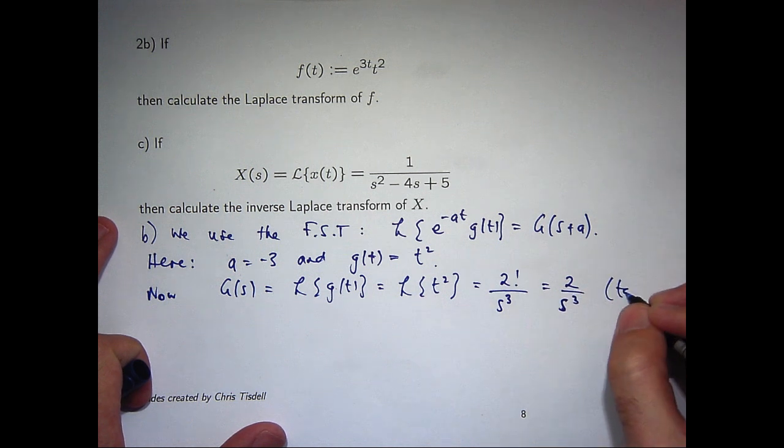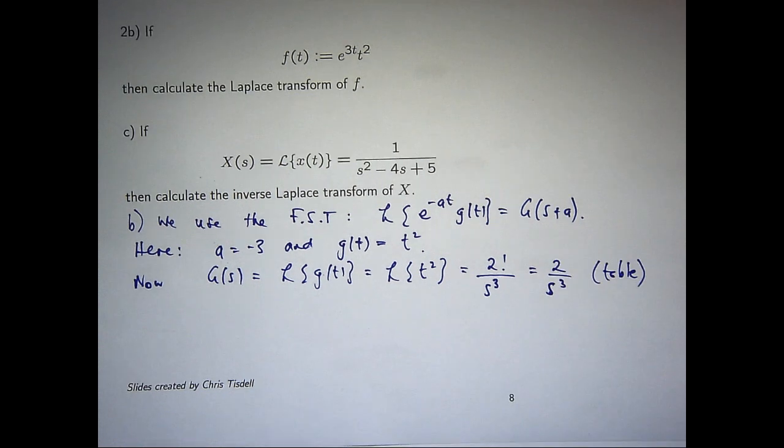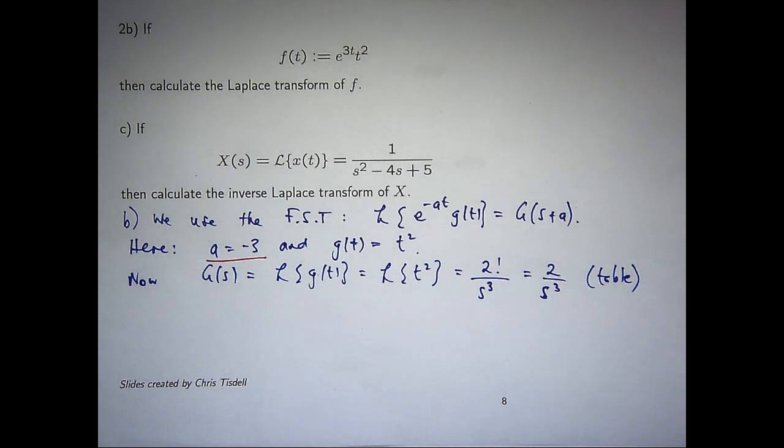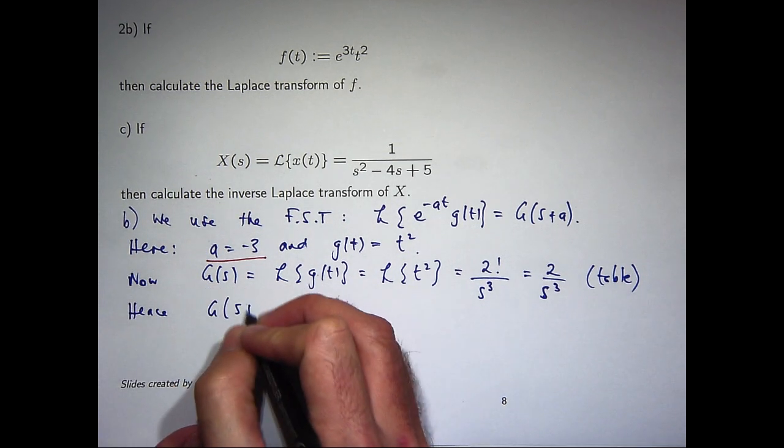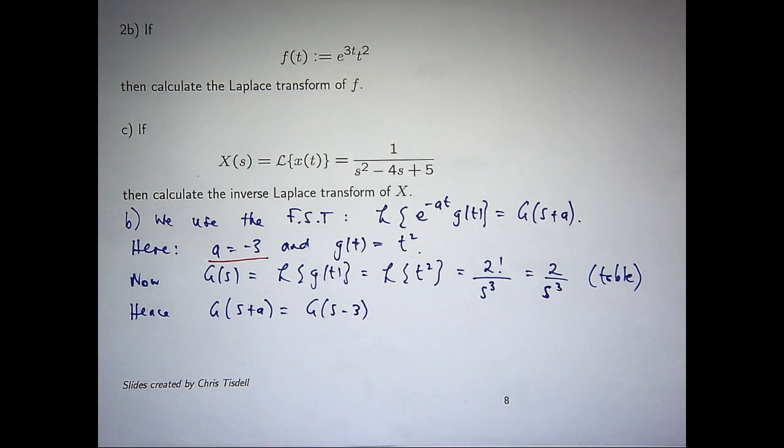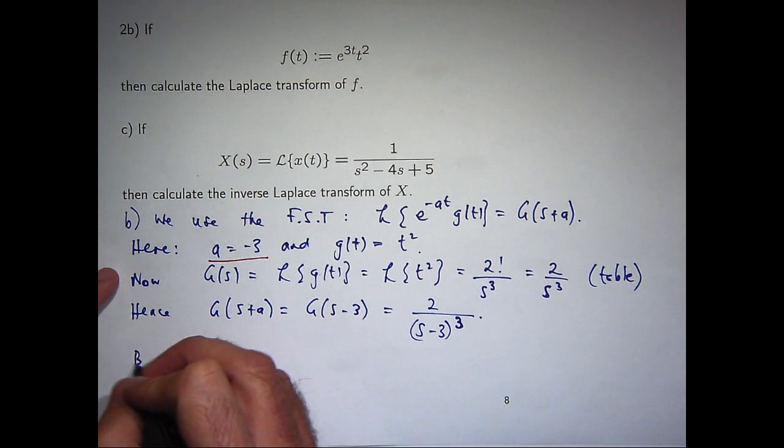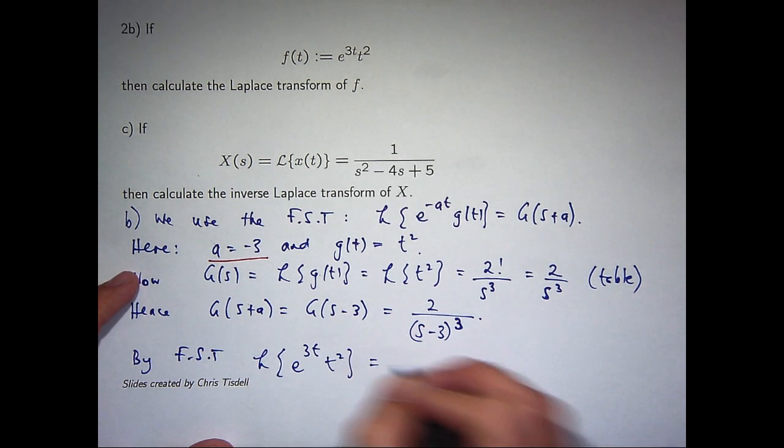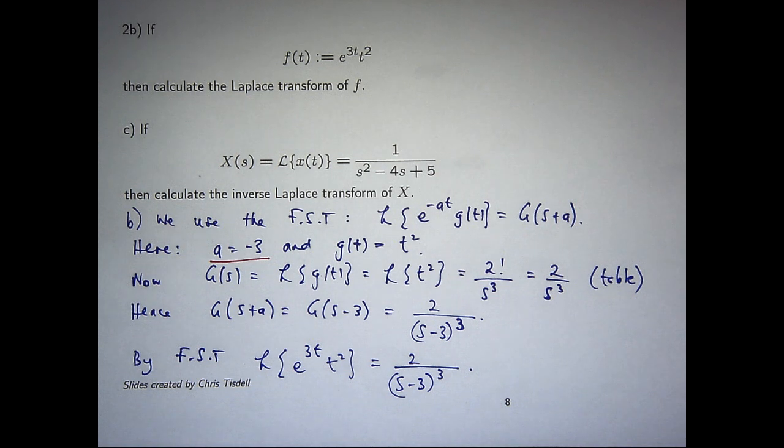So, here I've just used a table. So, now what we can do is take that and shift it a units. Here, our a is negative 3. So, in our g of s, we would replace s with s minus 3, all in brackets. So by the first shifting theorem, we can now make the conclusion that the Laplace transform of our function is this.